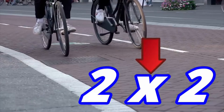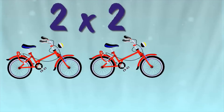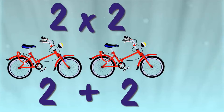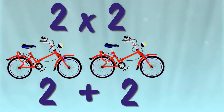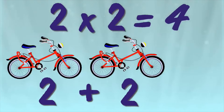This x tells us we're multiplying. The number two, two times, is the same as two plus two. It's the number two, twice. How many wheels are there in all? What's two times two? Four. Two times two equals four. There are four wheels in all.